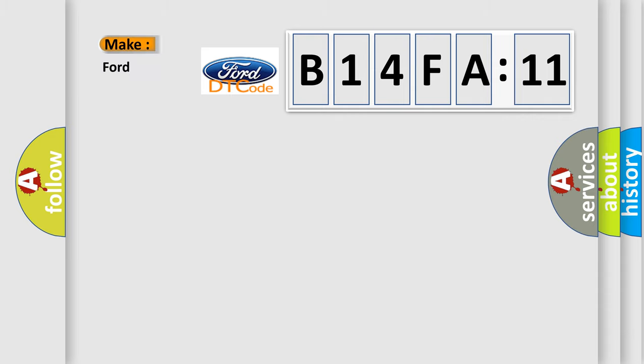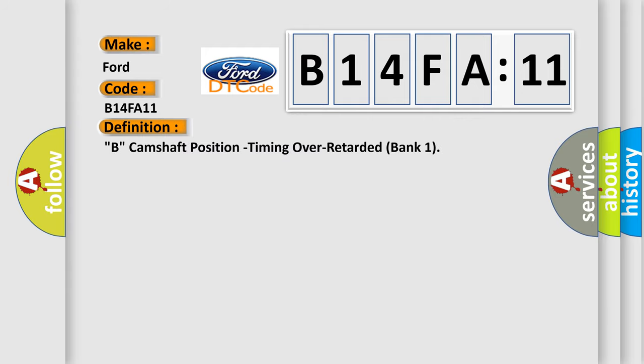So, what does the diagnostic trouble code B14FA11 interpret specifically in car manufacturers? The basic definition is: B camshaft position timing over retarded bank one.